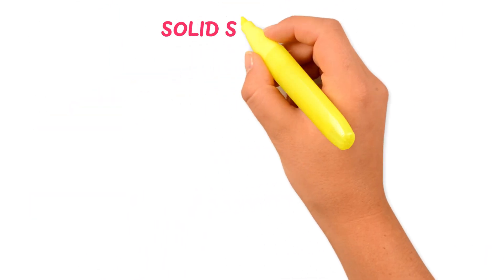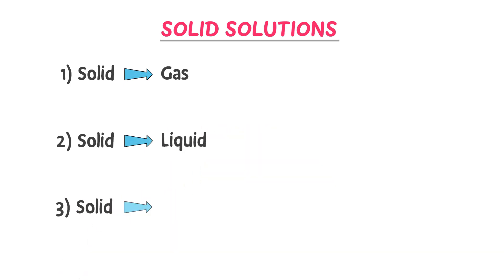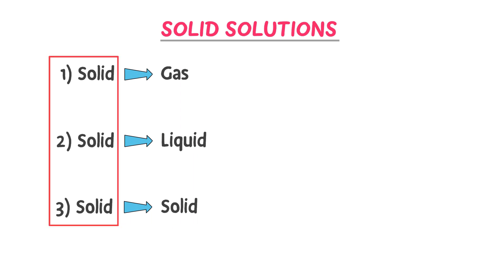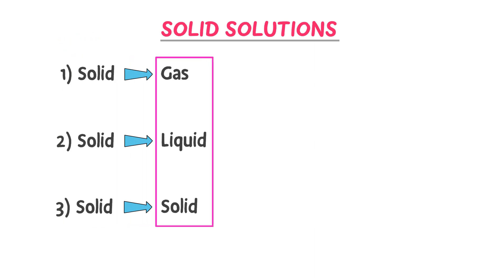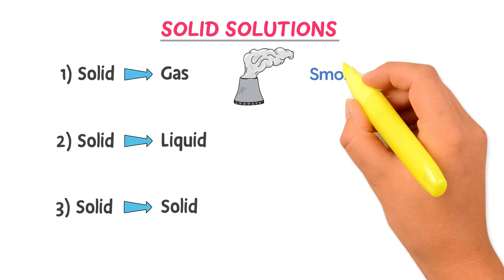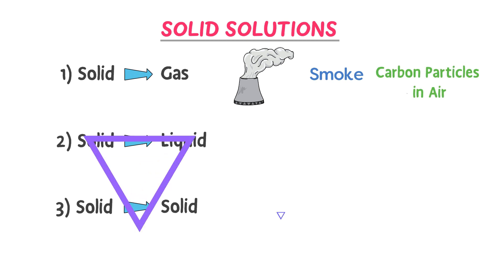Now let's look at the three different types of solid solutions: solid dissolved in gas, solid in liquid, and solid in solid. In all these three solutions, solid is taken as a solute and dissolved in three different solvents. The example of a solid in gas solution is smoke — smoke contains carbon particles in air.